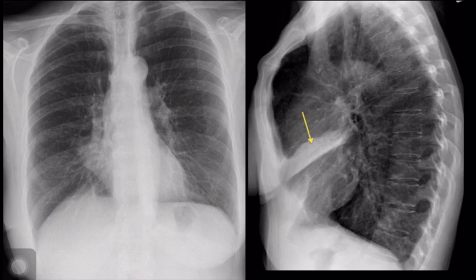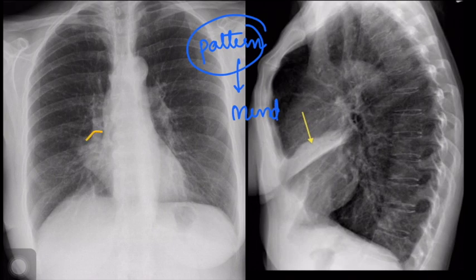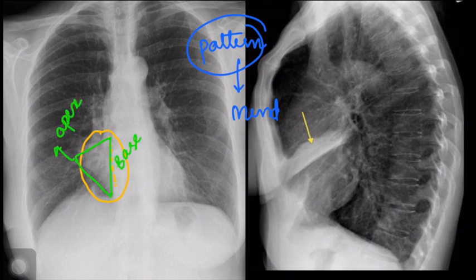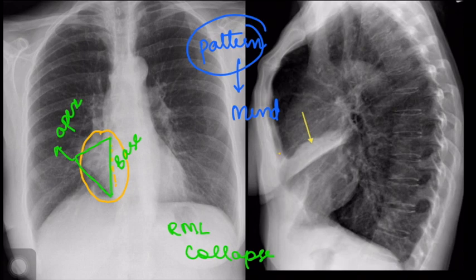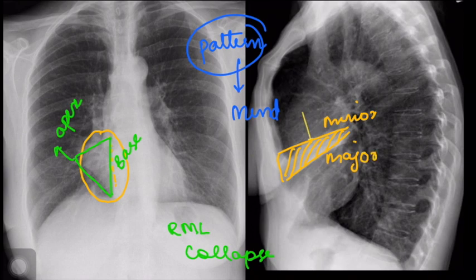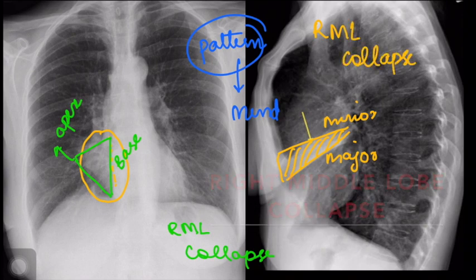In summary, once you spot an abnormality on a chest radiograph, stamp the pattern in your mind. On the frontal radiograph, an opacity with loss of the right heart border silhouette, with a triangular or wedge-shaped appearance with apex pointing away and base towards the heart, is the imaging appearance of right middle lobe collapse. On the lateral radiograph, it appears as a wedge-shaped opacity overlying the cardiac shadow due to displacement of the minor and major fissures. Keep this image in mind to diagnose right middle lobe collapse in the future.